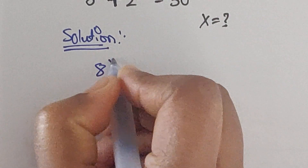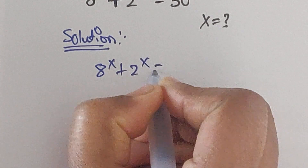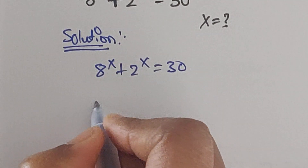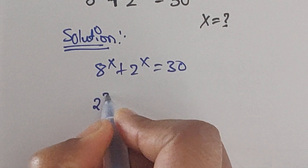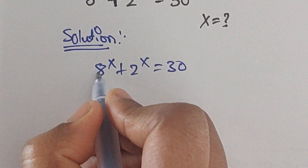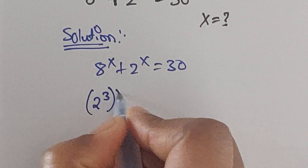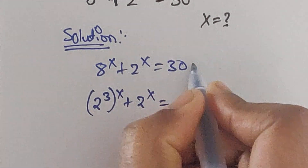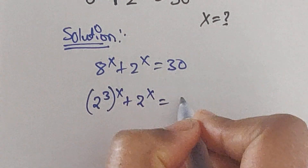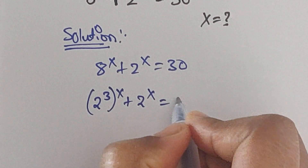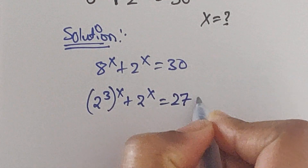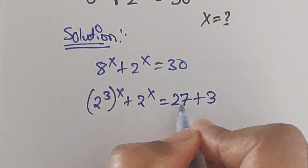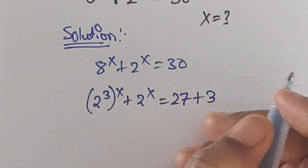We have 8 to the power of x plus 2 to the power of x equals 30. Here, 8 we can write as 2 cubed, so (2³)^x plus 2^x equals 30. And we can write 30 as 27 plus 3, which equals 30.